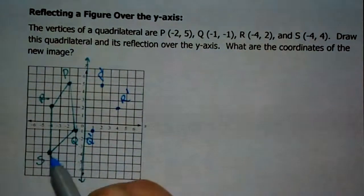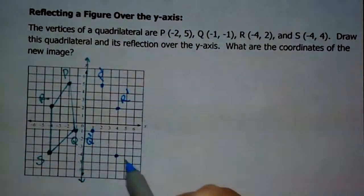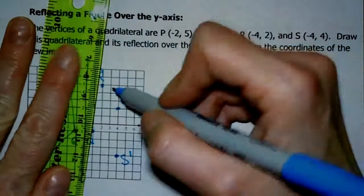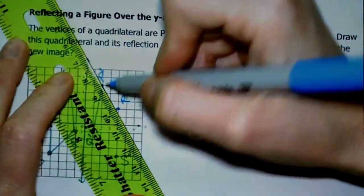And S is 1, 2, 3, 4 away. So I'm going to go 1, 2, 3, 4 away in the opposite direction. And now let's connect all these points and make sure that it actually looks like a reflection.